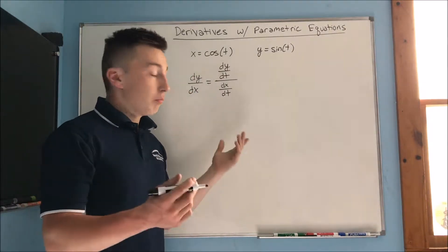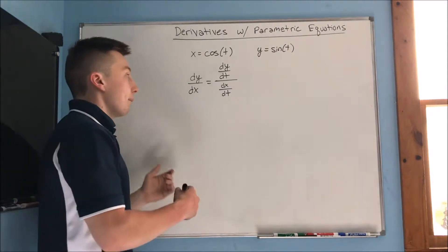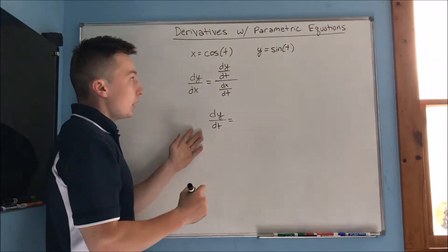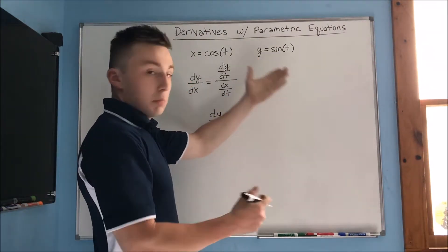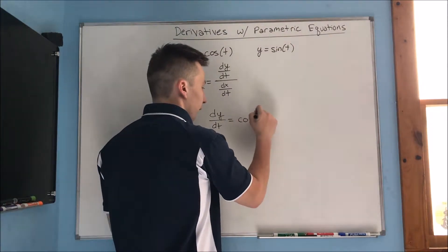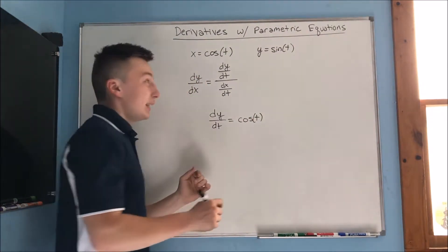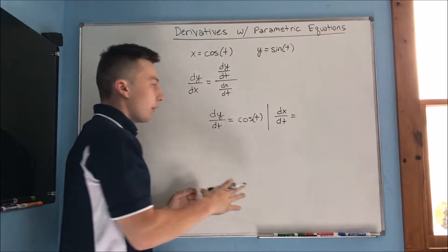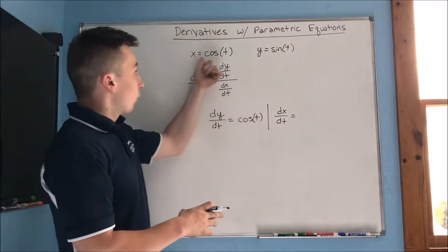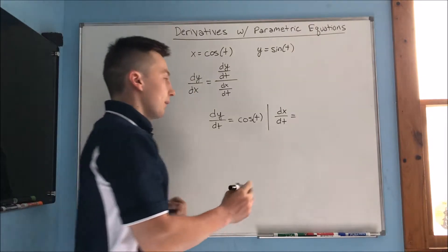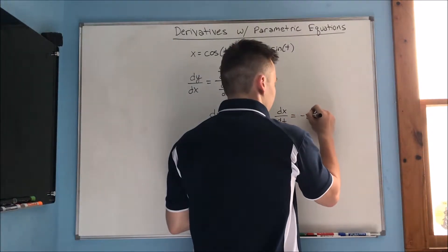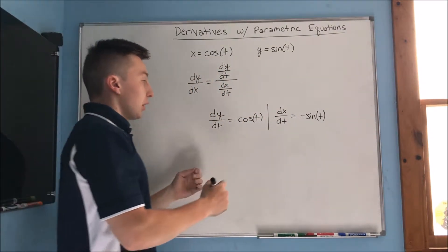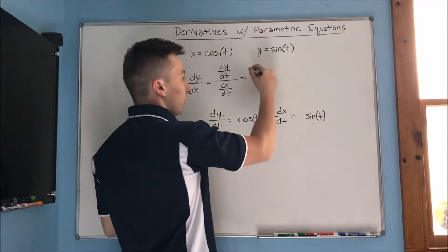We just need to find dy/dt and dx/dt, then plug them in to find dy/dx. What is dy/dt? That's the derivative of sin(t), which is cos(t). What is dx/dt? That's the derivative of cos(t), which is negative sin(t).